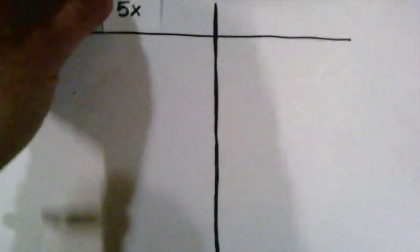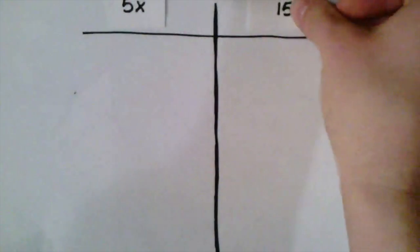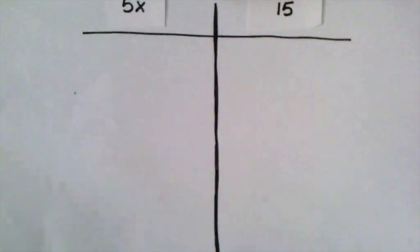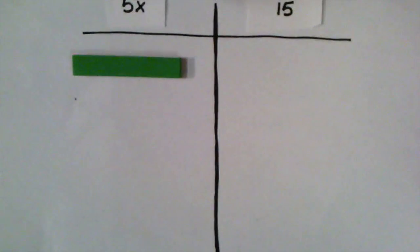In our third example, we're going to model a multiplication problem. We now have the problem 5x equals 15. So again, 5x just means we have five groups of x. Multiplication is really just repeated addition.